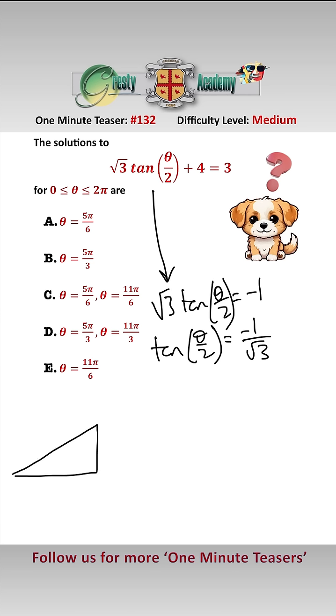Looking at the well-known right-angled triangle here, where this is root 3 and this is 1 and that is 2, this angle is known to be pi over 6.